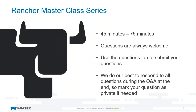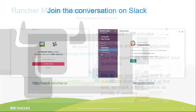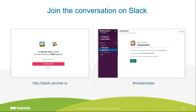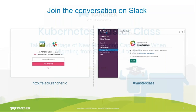Before we jump into the presentation, just wanted to go over a few details. These sessions usually run between 45 to 75 minutes. Please feel free to ask questions along the way. There is a questions tab in your GoToWebinar panel. We'll do our best to answer them or address them at the Q&A session towards the end. We also have a channel dedicated to the masterclass series in the Rancher Users Slack at slack.rancher.io, available to you anytime even after this session wraps up.